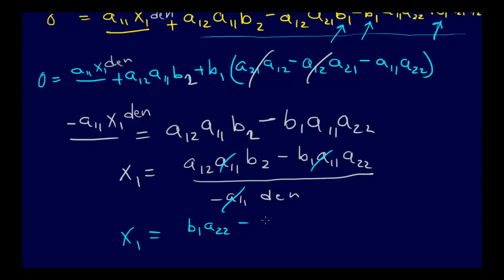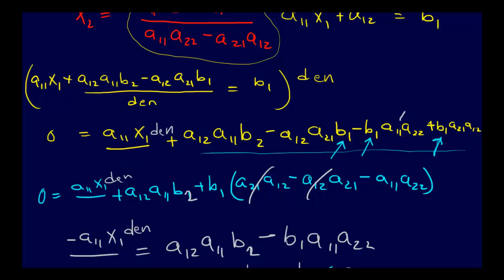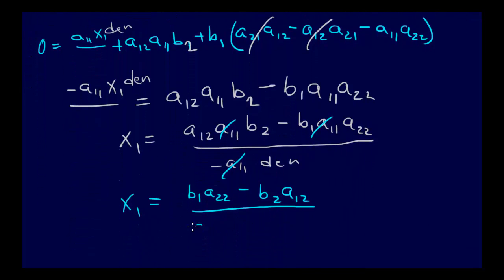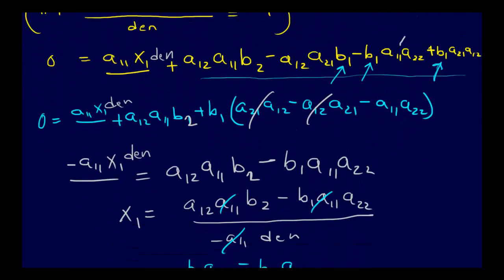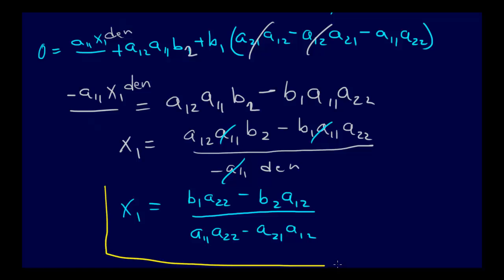So we say x1 then equals b1 a1a22 minus b2 a12 over that denominator, which actually was, if we go back up and look, we remember what it was, a11a22 minus a21a12, a11a22 minus a21a12. So after all that, then we get x1, hooray.